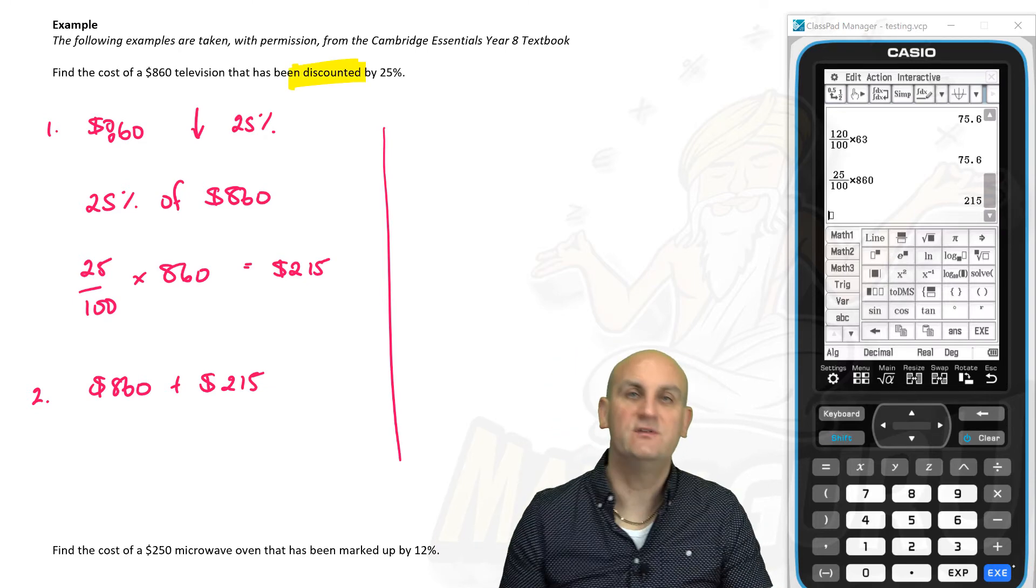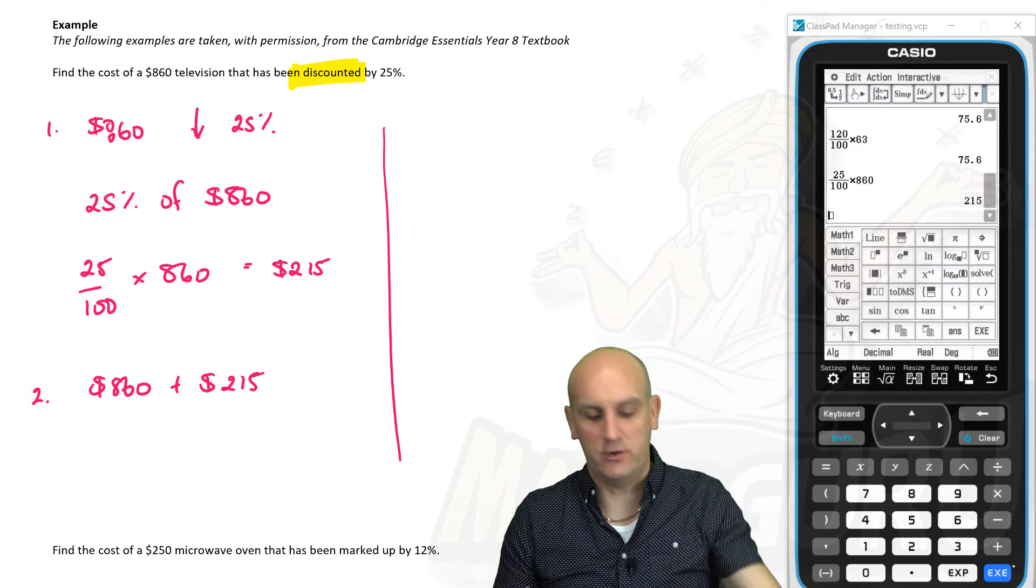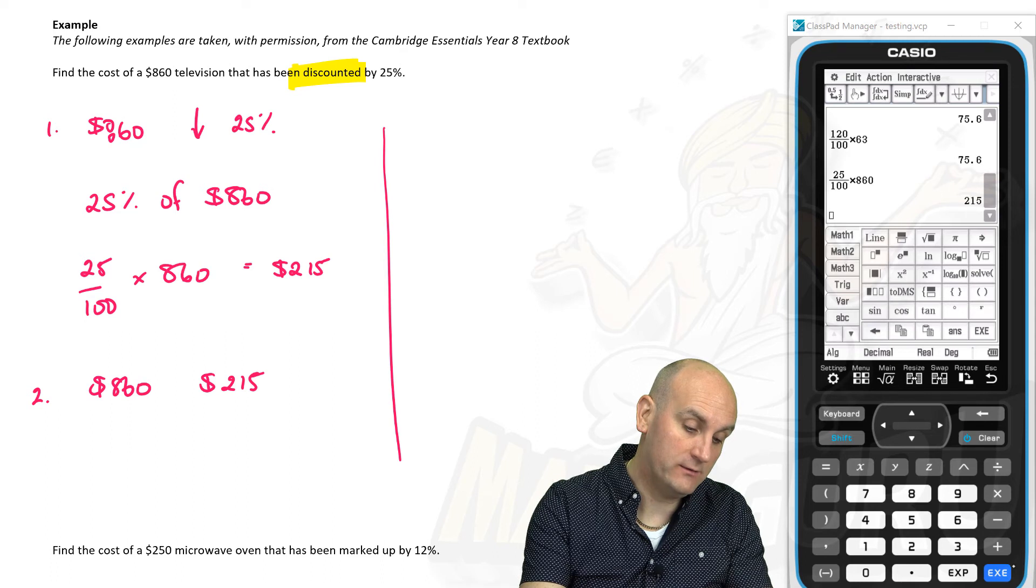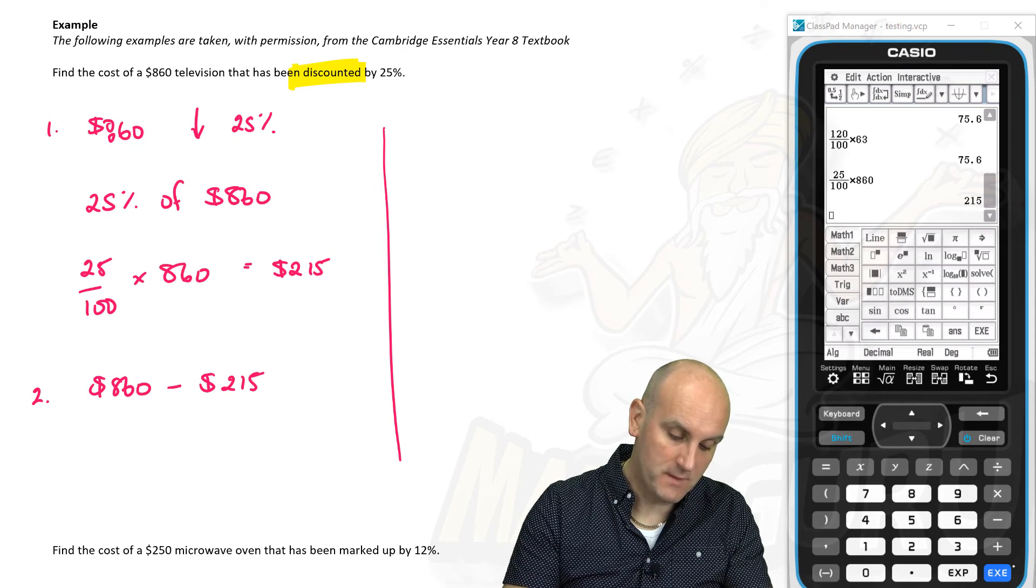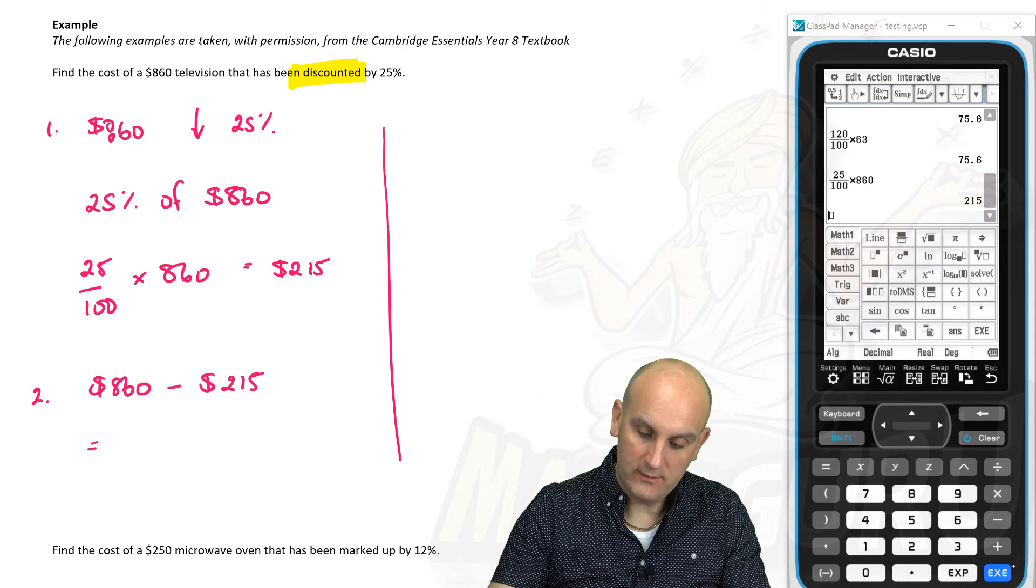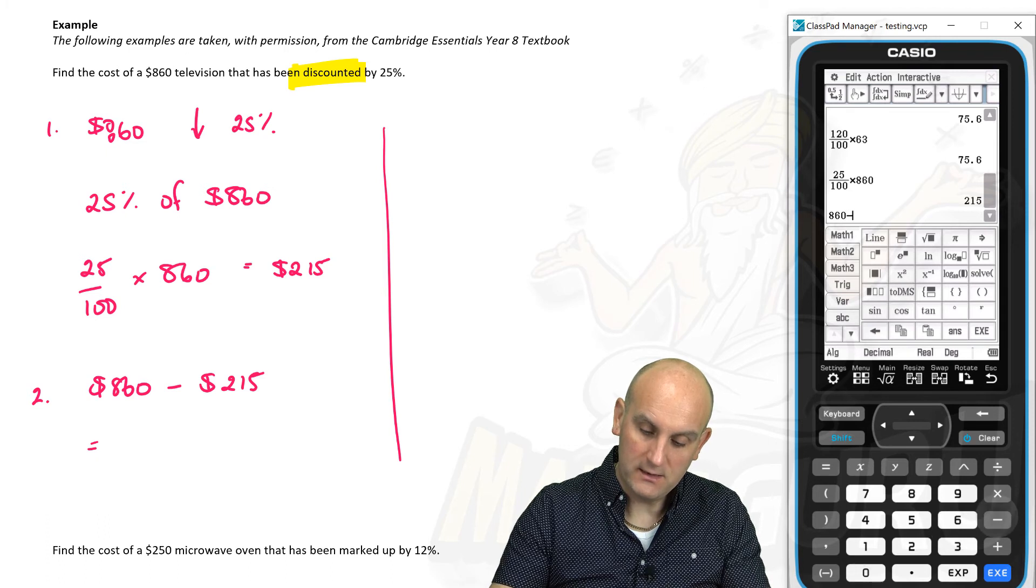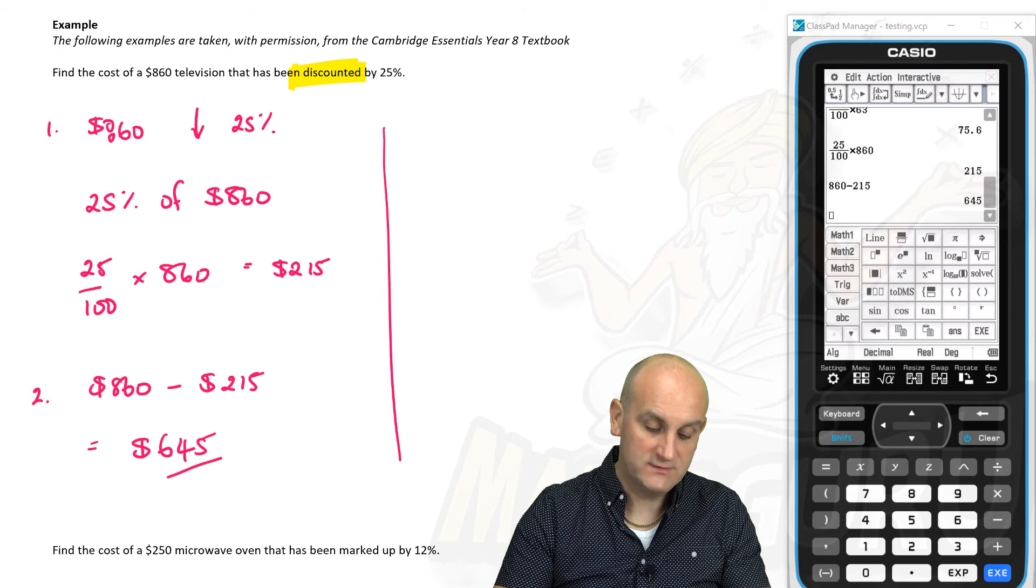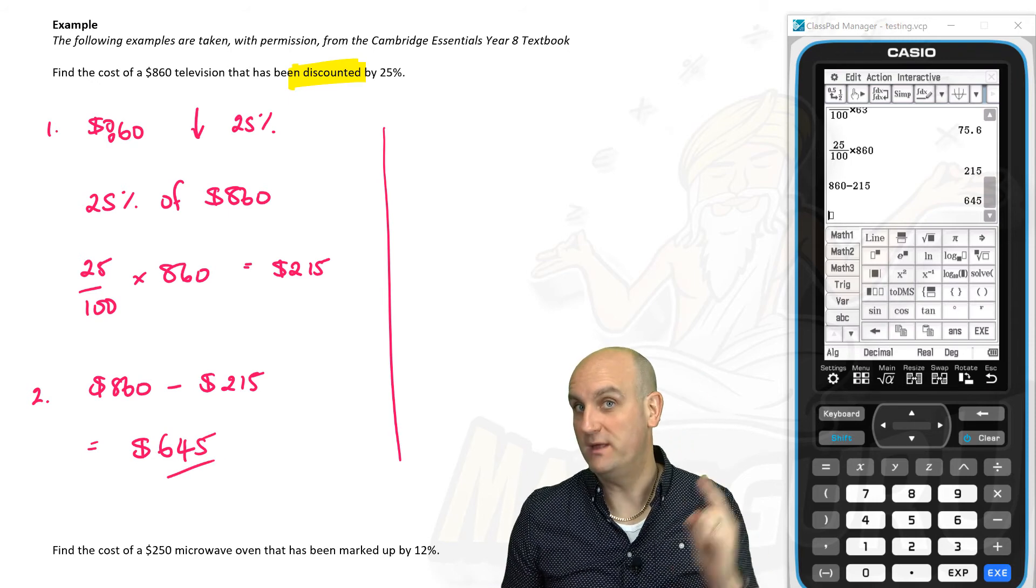The question doesn't want an add. The question's told you it's been discounted. And discounted means it's gone down. So actually that plus is really a minus. So I'm going to put a minus sign in here. And now I do $860. I'm going to minus that $215, which is going to give me a final cost of my television of $645. Method one.